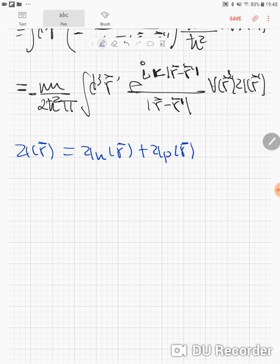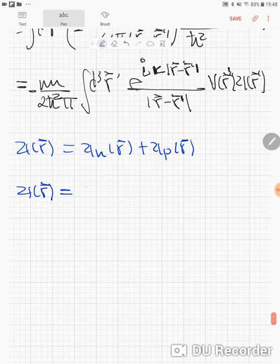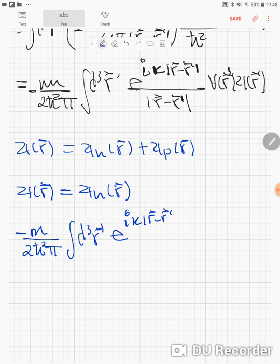That means the total solution for the wave function is given by the homogeneous solution minus M divided by 2h bar squared π, the integral over d³r prime of e to the i kappa times R minus R prime divided by R minus R prime (absolute value) times V of R prime Psi of R prime.